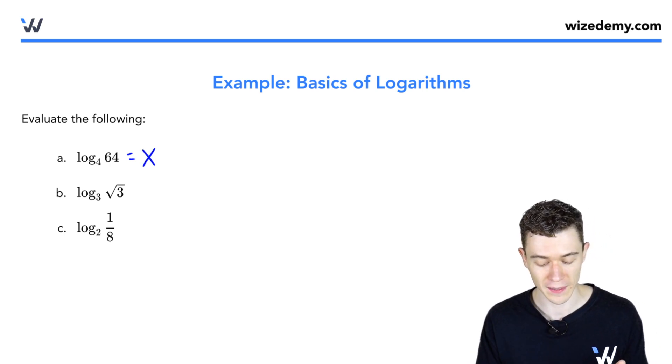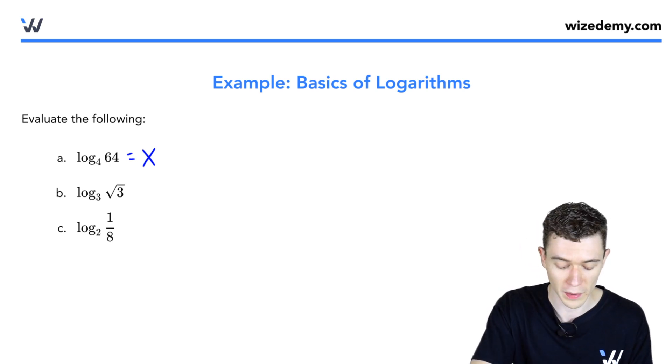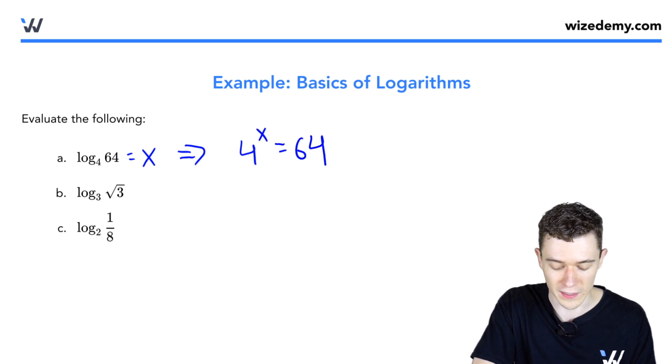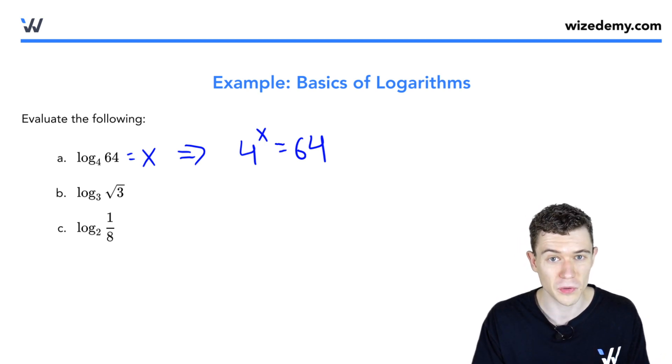I'll call this x. How we can do this is by turning it into the exponential form. Remember, this means the same exact thing as 4 to the power of x equals 64. That's rewriting the logarithmic form in exponential form.